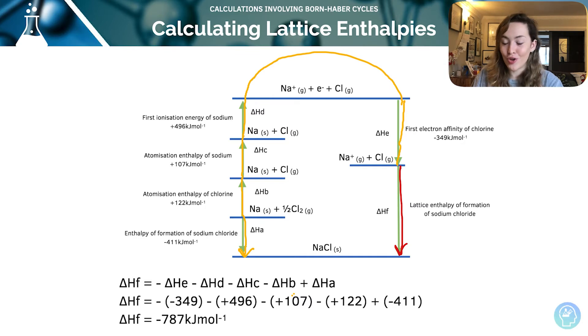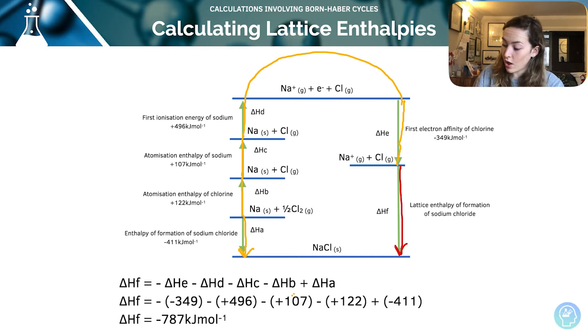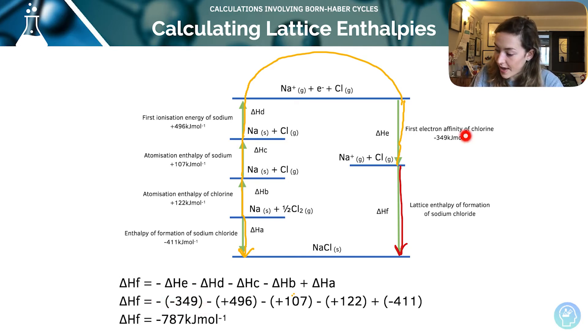Be really careful with the direction that you go through those arrows, and then put the values in — using brackets to ensure you don't mix up any pluses or minuses. For example, minus the value for E, which is minus 349, giving an unknown value of minus 787 kilojoules per mole. A top tip: always check the direction of your arrows. If you're going with the arrow it's positive; if you're going backwards against an arrow it's a negative value.